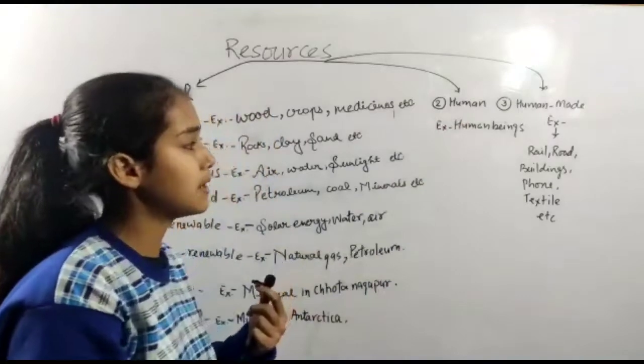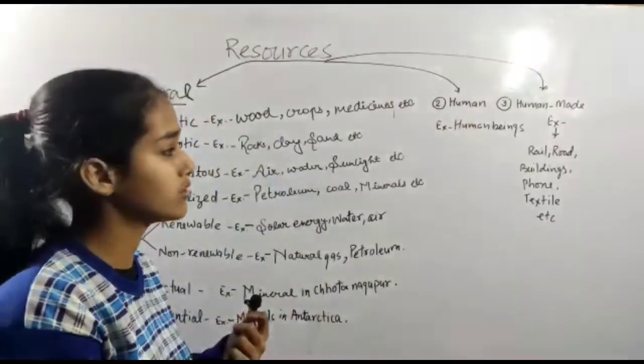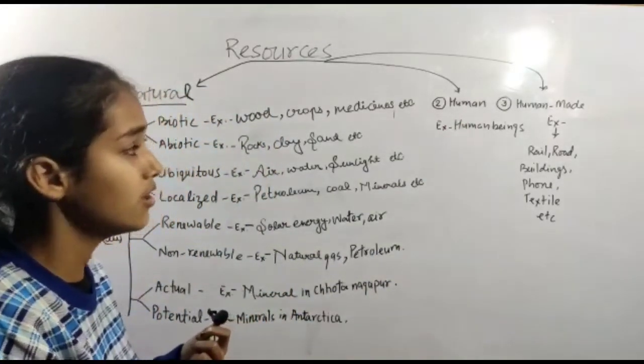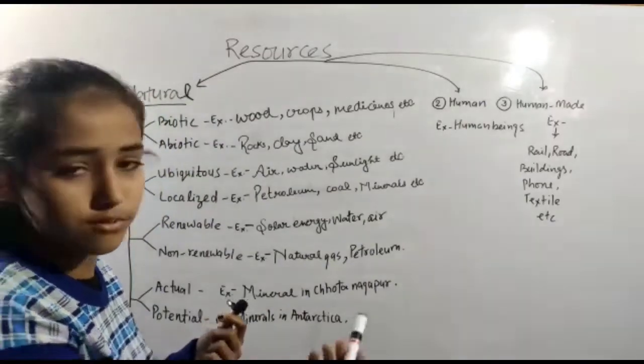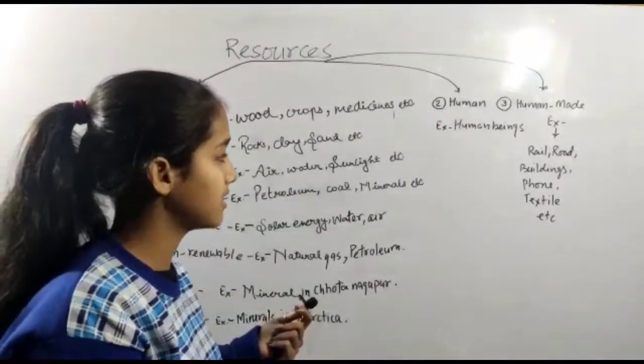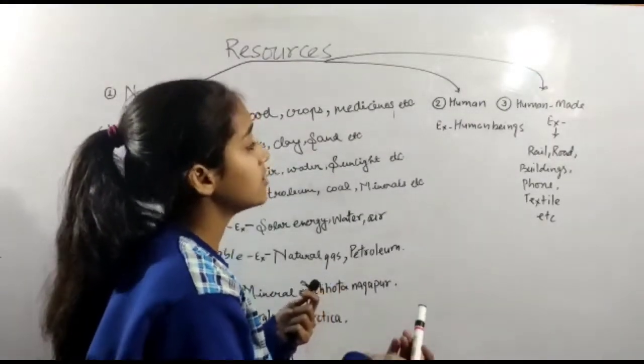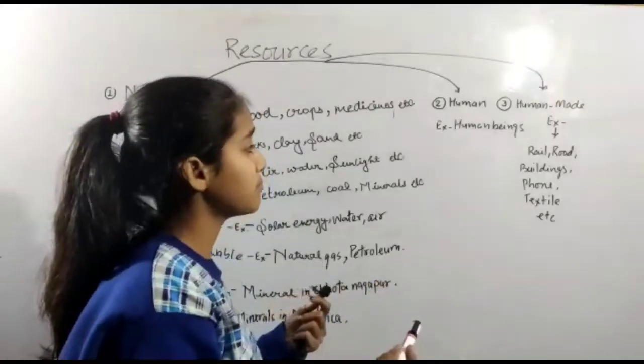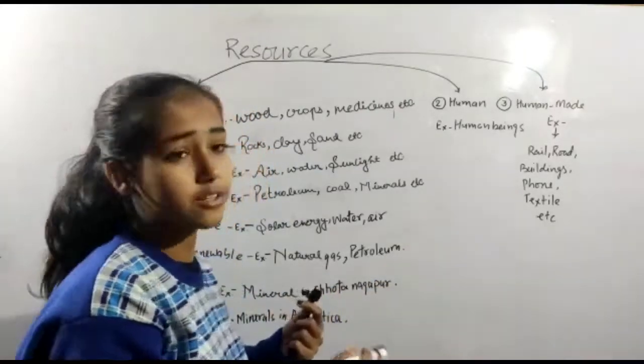And the second is human resources. Educated and skilled people are an example of human resources. People are the most important part of the country.